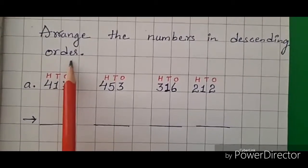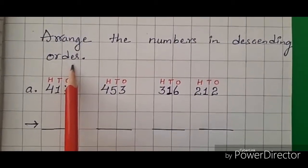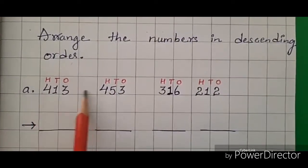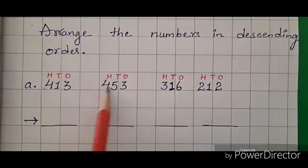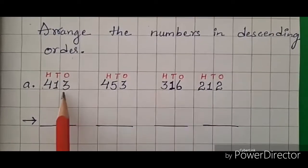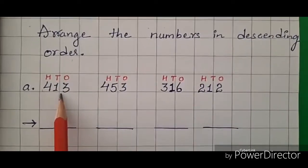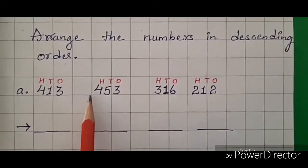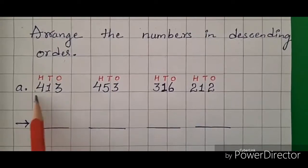Here we have to arrange the numbers from big to small. So let's identify the big number first. Can you tell me which number is bigger here in the hundreds place?